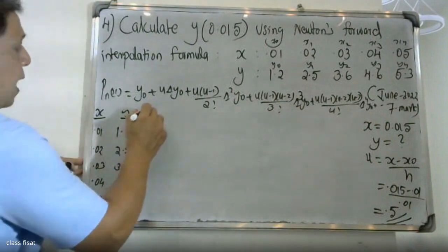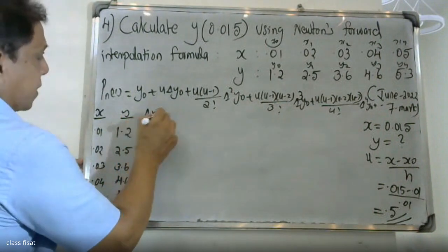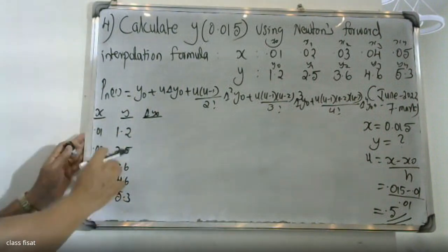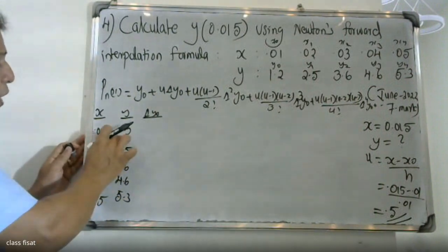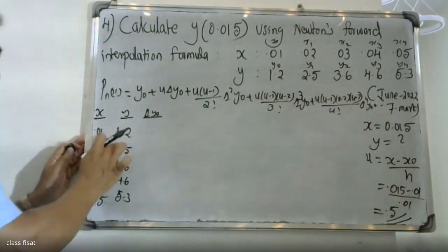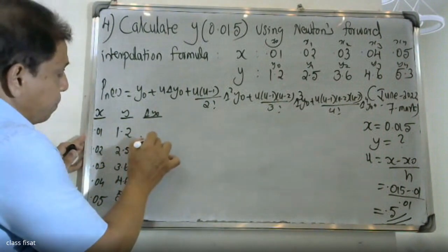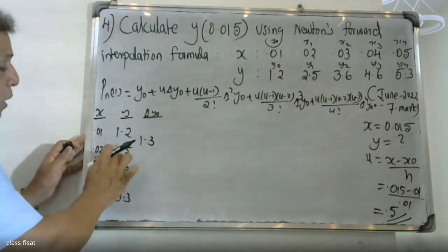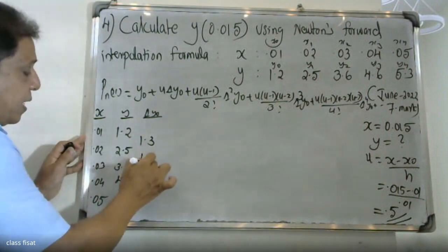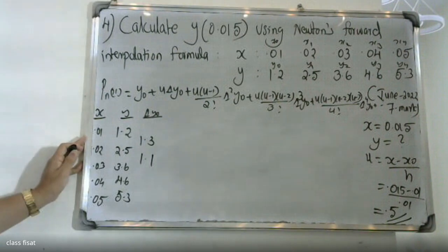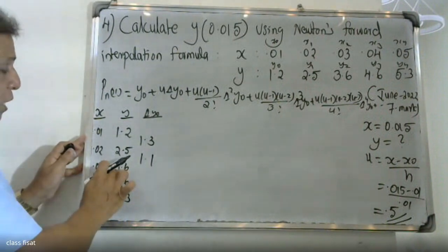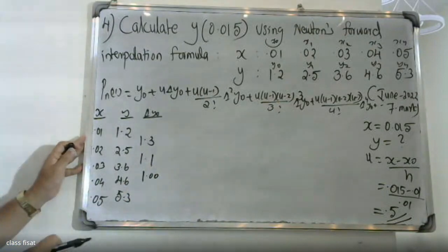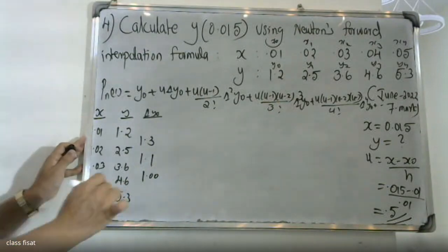Computing first differences: Δy0 = 2.5 − 1.2 = 1.3, Δy1 = 3.6 − 2.5 = 1.1, Δy2 = 4.6 − 3.6 = 1.0, Δy3 = 5.3 − 4.6 = 0.7. Second differences: Δ²y0 = 1.1 − 1.3 = −0.2, Δ²y1 = 1.0 − 1.1 = −0.1, Δ²y2 = 0.7 − 1.0 = −0.3.